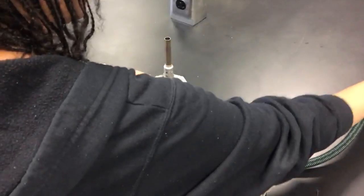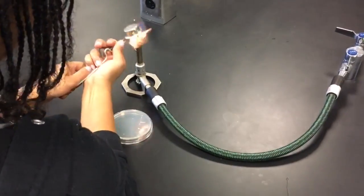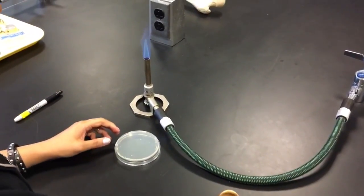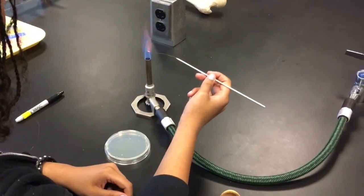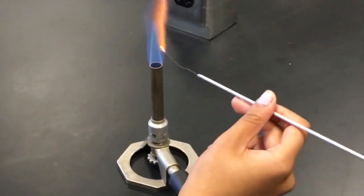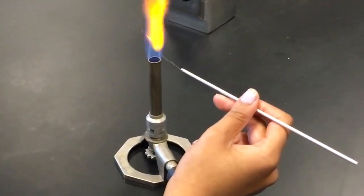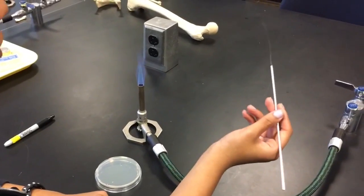So we're going to start the Bunsen burner here. That's a pretty good flame. And we're going to take the inoculating loop and sterilize it here. Make sure, there we go. Then we'll let it sit for 30 seconds or so.